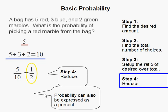Another way you can express probability is to write it as a percent. So 1 half can be written as 50%.